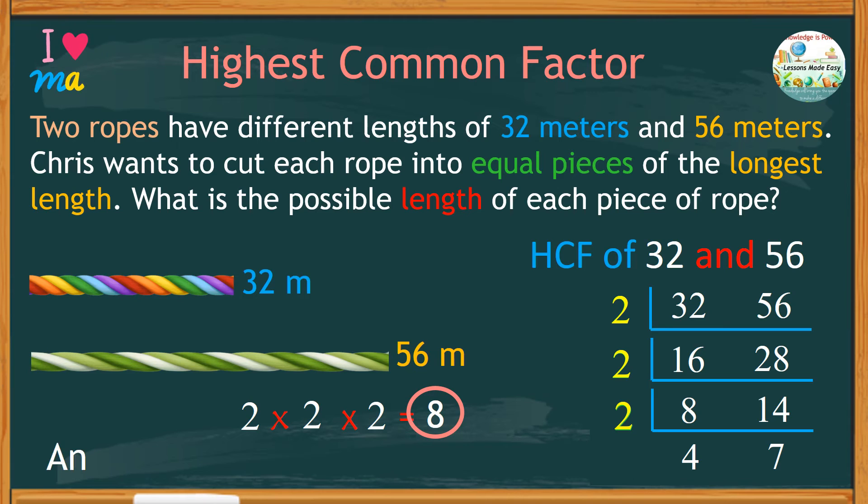Therefore, the answer to the question as to what would be the length of each rope is 8 meters. It means the rope that is 32 meters long would have 4 pieces with 8 meters each. And you can make 7 pieces of 8 meters in a 56 meter rope.